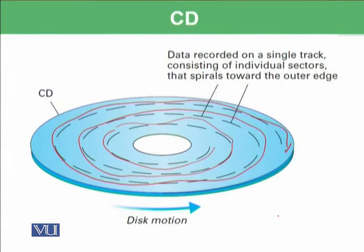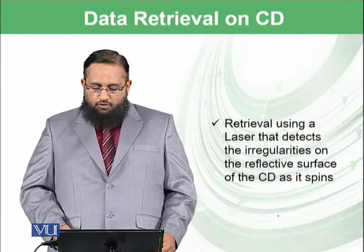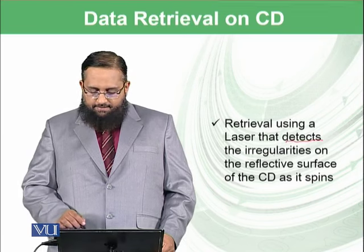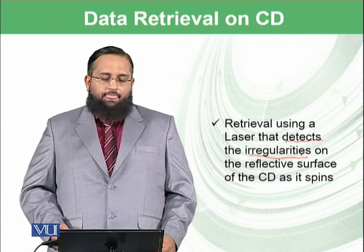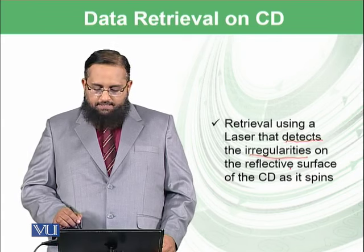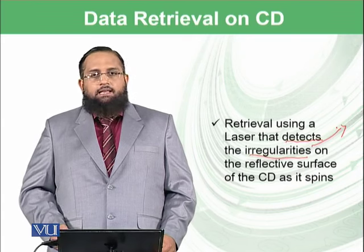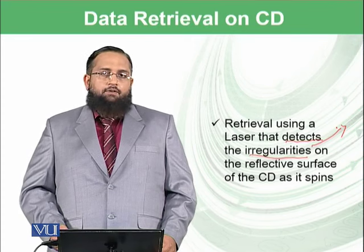Data is recorded on a single track consisting of individual sectors that spirals towards the outer edge. Data retrieval uses a laser, and that laser can detect irregularities on the reflective surface. We had created variations in the reflective surface to store data, and the laser detects those irregularities to understand where the data is.